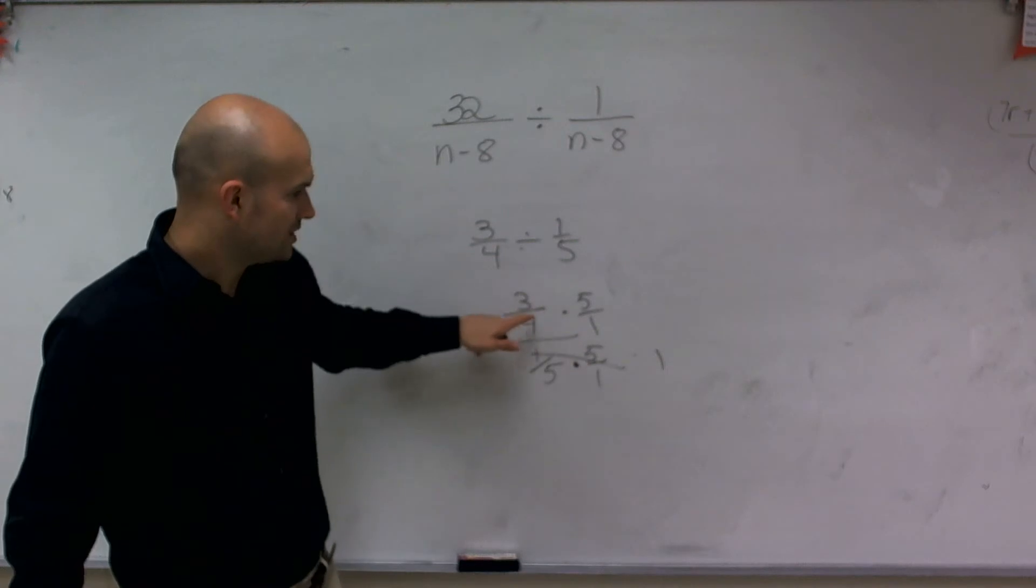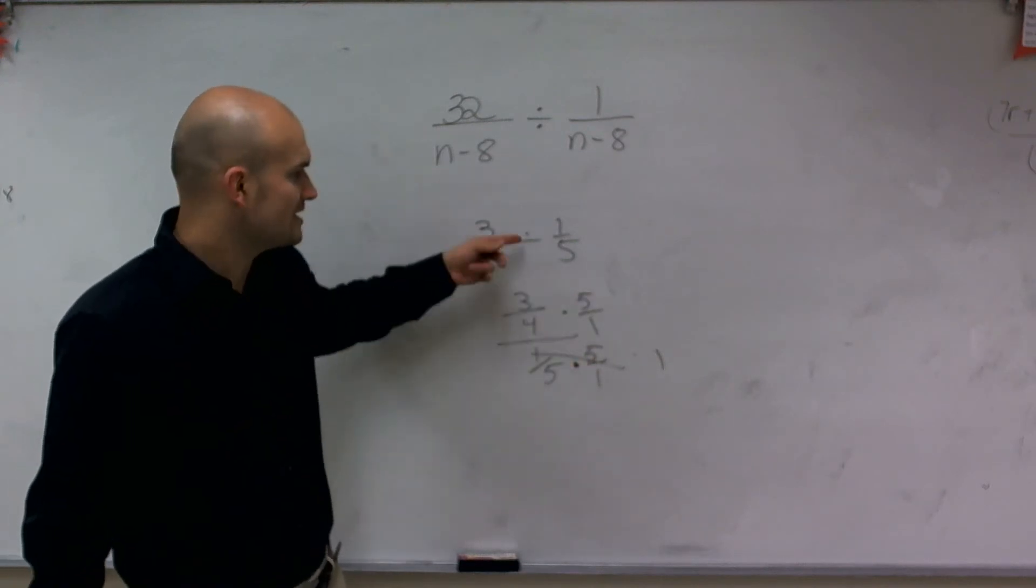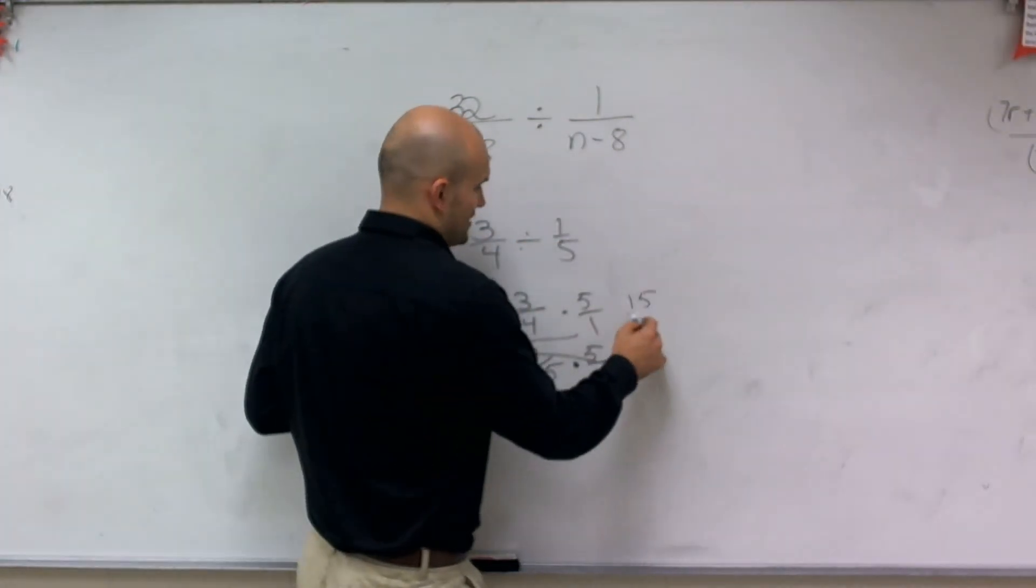But what happens is when you look up here, 3/4 times 5 over 1. So really, instead of dividing by a fraction, you can also multiply by its reciprocal to get your answer.